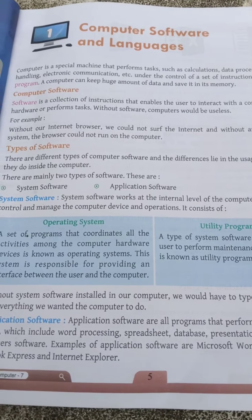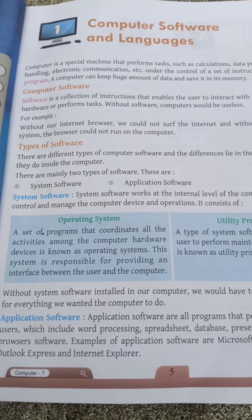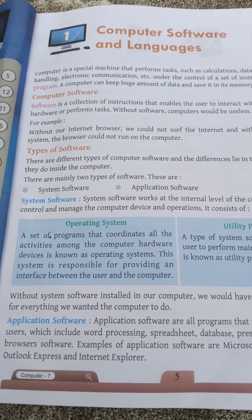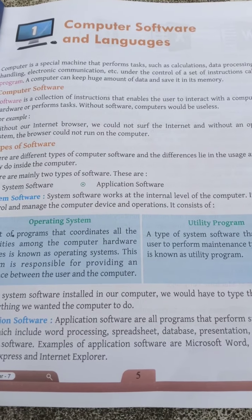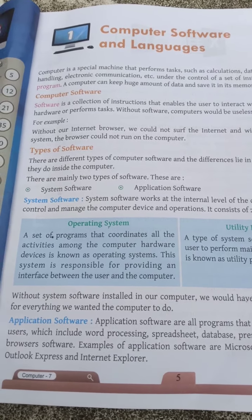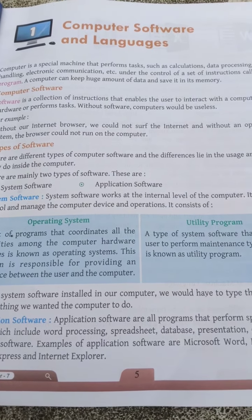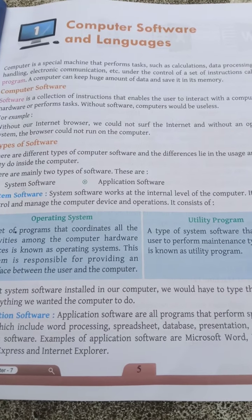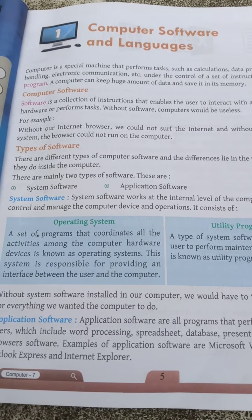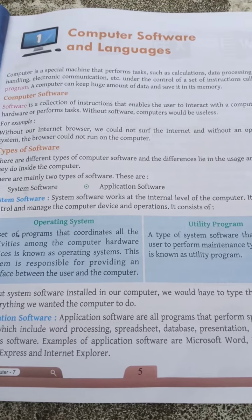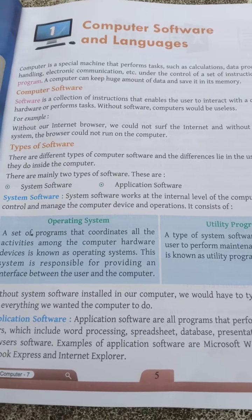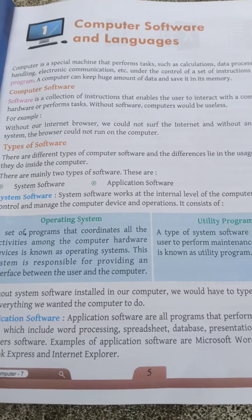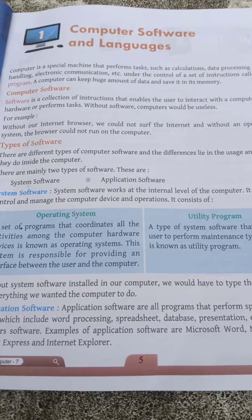Friends, today I am going to discuss CBSE Class 7, first chapter, computer science. As in every textbook, every computer textbook, computer is a special machine. Computer is an electronic machine that performs tasks such as calculations, data processing, handling, electronic communication, etc., under the control of a set of instructions called a program. It will start every chapter like this.